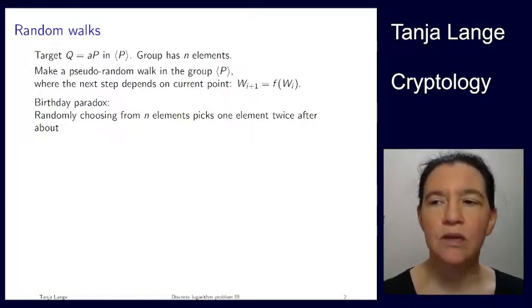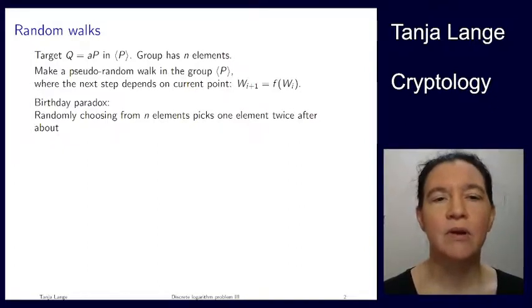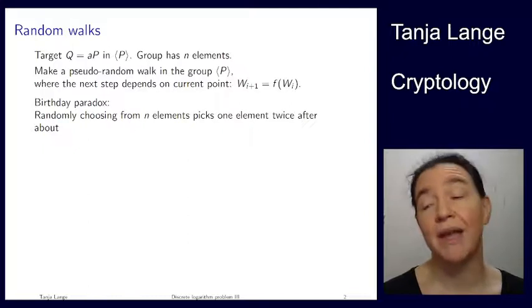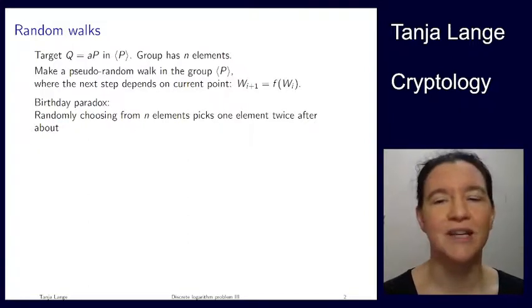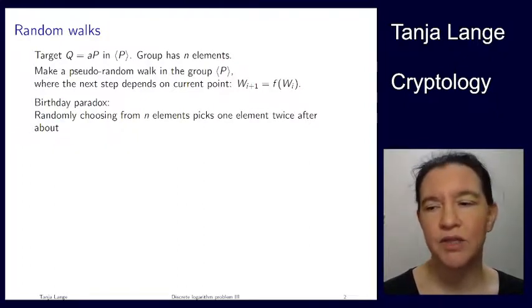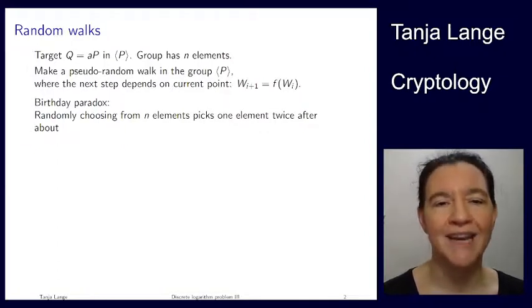And so this lecture sets up for one algorithm, which is called the Pollard-Rho method. It's just preliminary work. We'll get the Pollard-Rho method in the next lecture. But this one is explaining what random walks are doing and how we can deal with them. So we again have a target a times p, and it's a cyclic group generated by p, written additively, and we talk about n elements in that group.